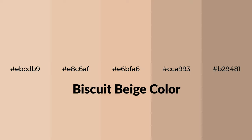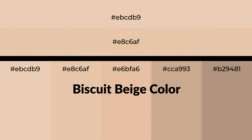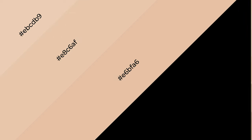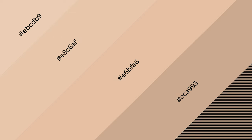Warm shades of biscuit beige color with red hue for your next project. To generate tints of a color we add white to the color — tints create light and exquisite emotions. To generate shades of a color we add black to the color, and it is used in patterns, 3D effects, and layers. Shades create depth and drama.